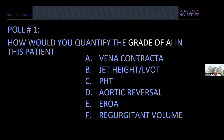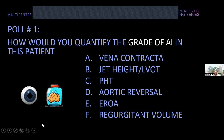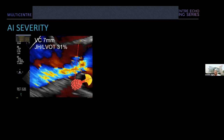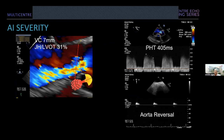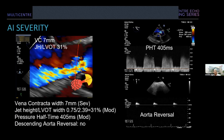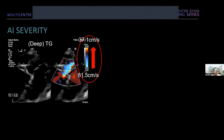There's really no right answer here, and many people will use multiple techniques to grade AI. In this patient we can look at vena contracta — it's important to zoom in and get a nice flow acceleration zone. The vena contracta here measures 7 mm. The jet height to LVOT ratio comes out to 31%. Pressure half-time is 405 ms, and there is no aortic reversal in this patient. Using these simple measurements: severe based on vena contracta, moderate based on jet height and pressure half-time, and no descending aorta reversal.